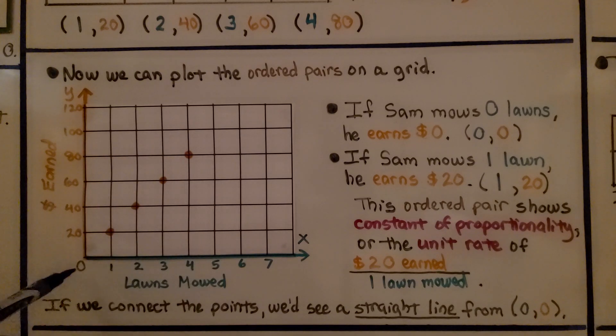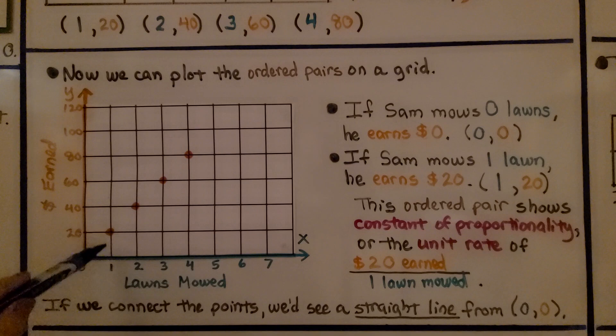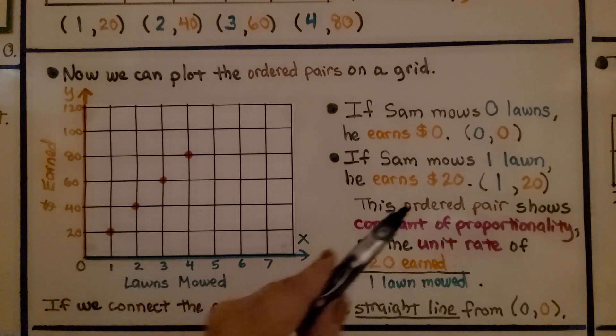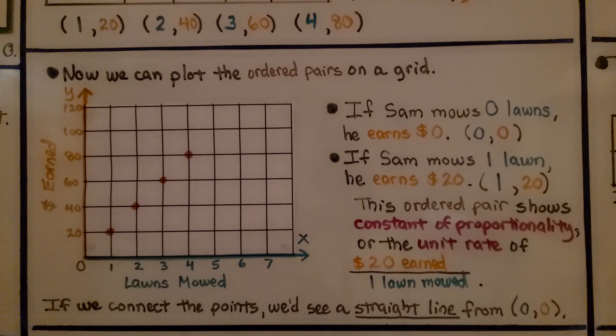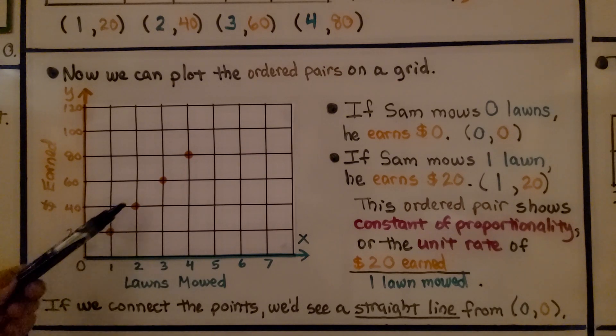If Sam mows zero lawns, he earns $0. If Sam mows one lawn, he earns $20. This ordered pair, (1,20) for the x and y, shows constant of proportionality, or the unit rate, of $20 earned over one lawn mowed. If we connect the points, we'd see a straight line from (0,0), the origin.